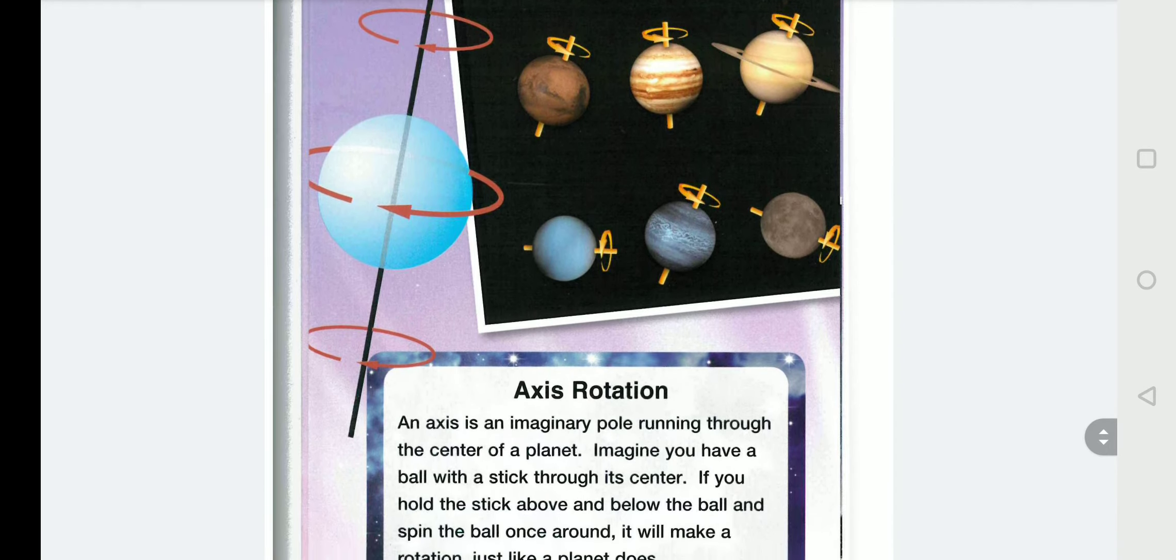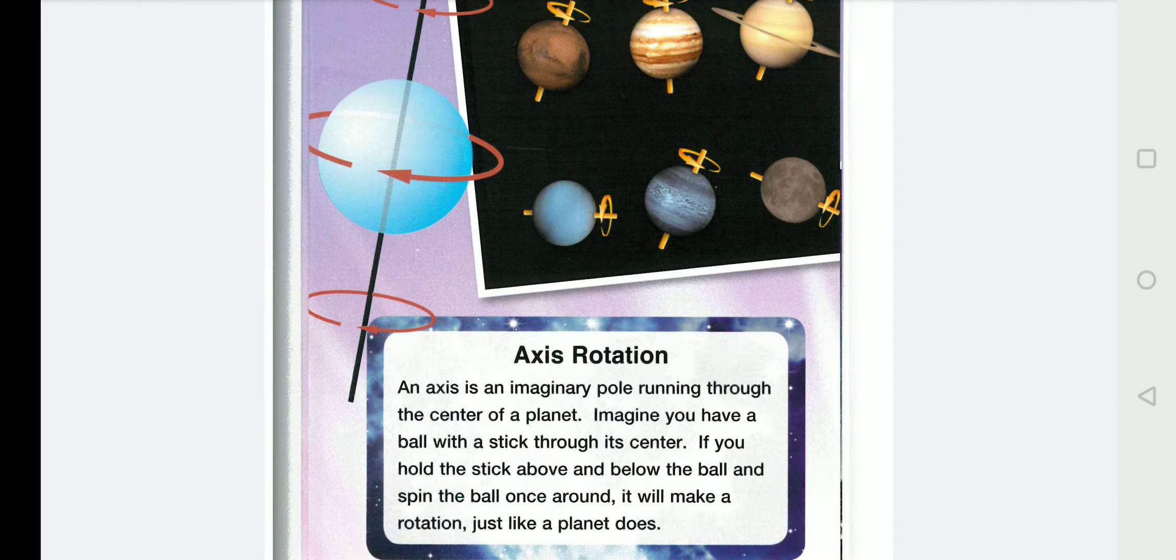Axis rotation. An axis is an imaginary pole running through the centre of a planet. Imagine, you have a ball with a stick through its centre. If you hold the stick above and below the ball and spin the ball once around, it will make a rotation, just like a planet does.